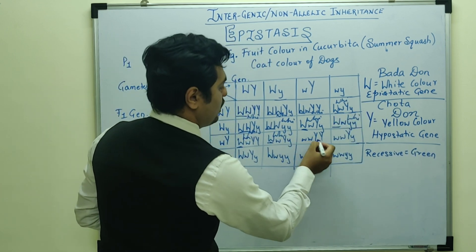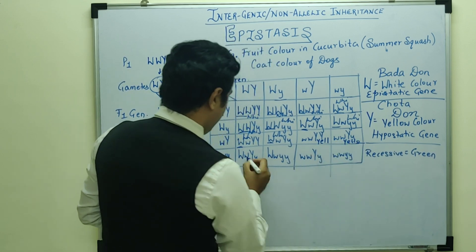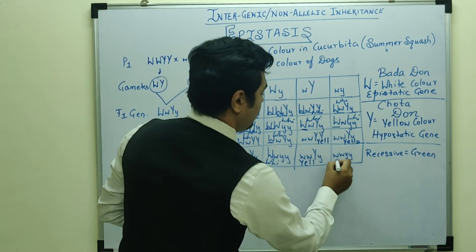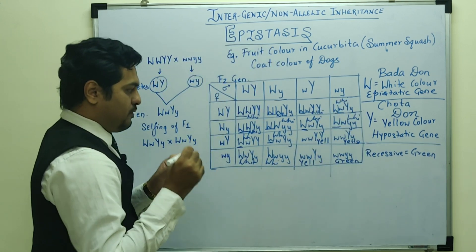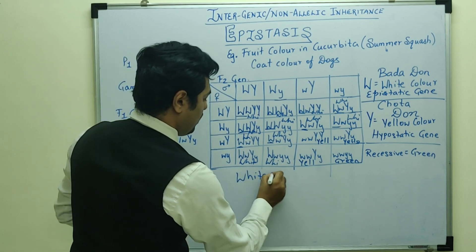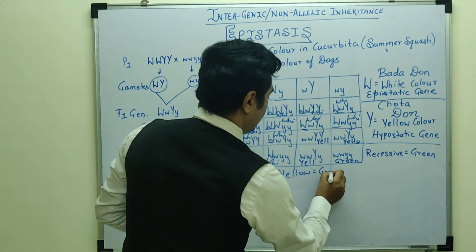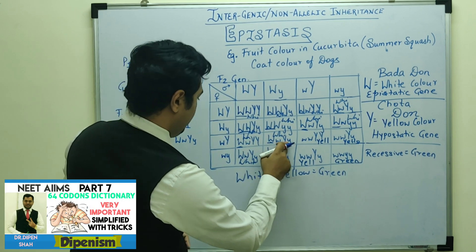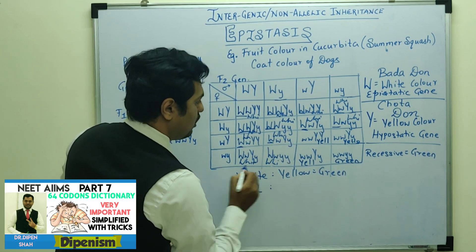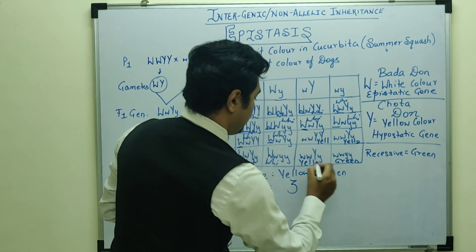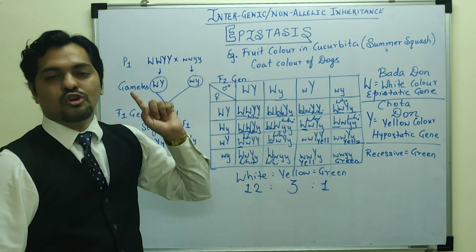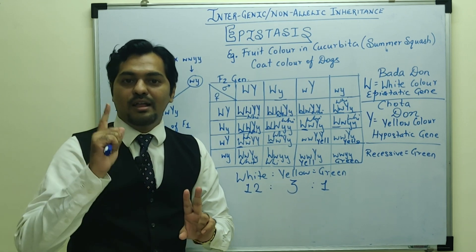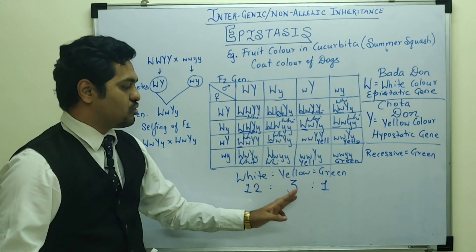In the F2 generation Punnett square: yellow appears here, yellow again here, white again here, white here, yellow here, and where neither the big Don nor the small Don is present, the colour is green. So the F2 generation ratio of white fruit colour to yellow fruit colour to green fruit colour is: white is 12, yellow is 3, and green is 1. So basically, in epistasis the ratio is 12:3:1. Complementary genes ratio was 9:7, supplementary was 9:3:4, and epistasis ratio is 12:3:1.